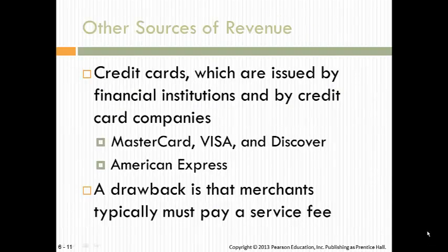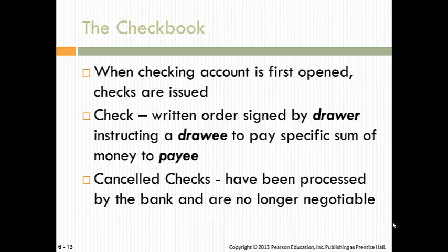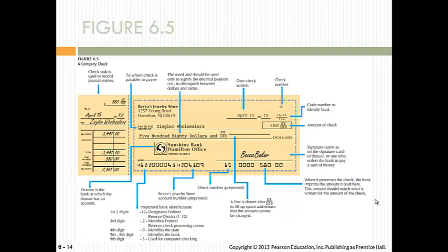Credit cards are used by financial institutions and credit card companies such as MasterCard, Visa, American Express, and Discover. A drawback is that merchants typically must pay a service fee. Debit cards are issued by the banks — the card is not an extension of credit, it's like a cash transaction, and the holder cannot spend more than the balance currently in their account. With minor exceptions, it's treated the same as a credit card. In terms of cash forms, there's cash across the counter, a debit card, and a checkbook — all considered types of cash for transaction purposes.